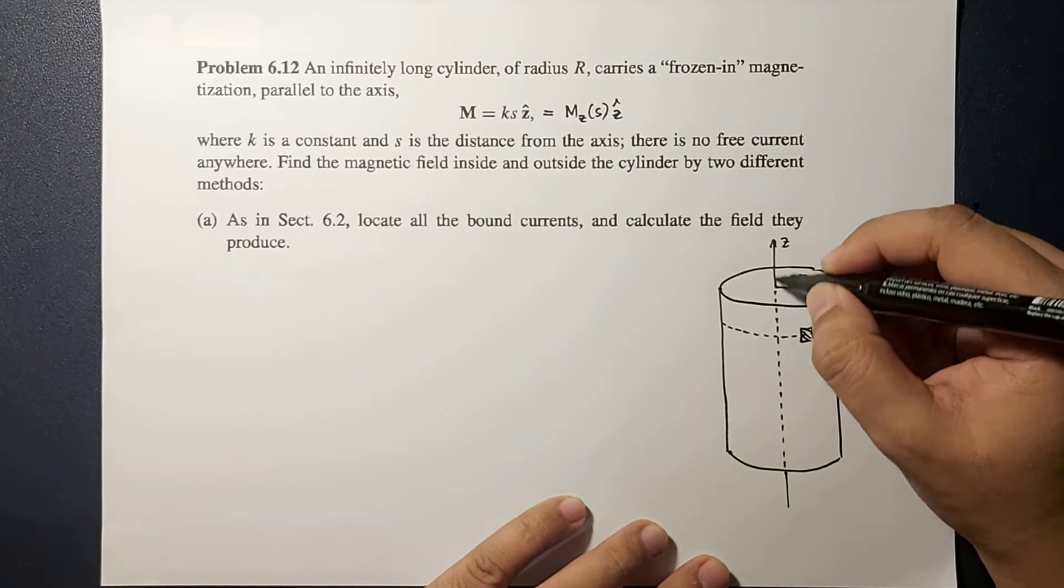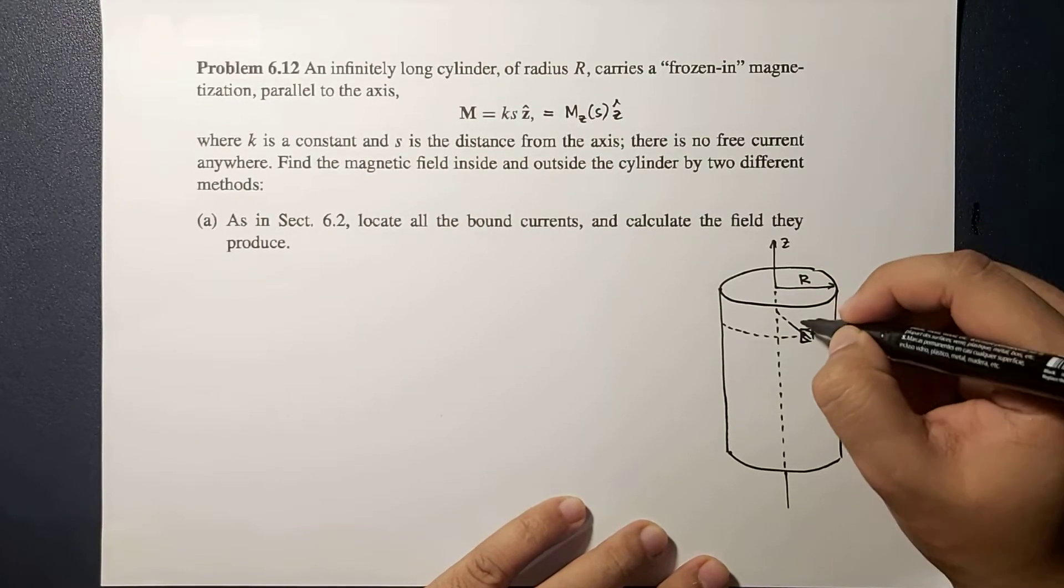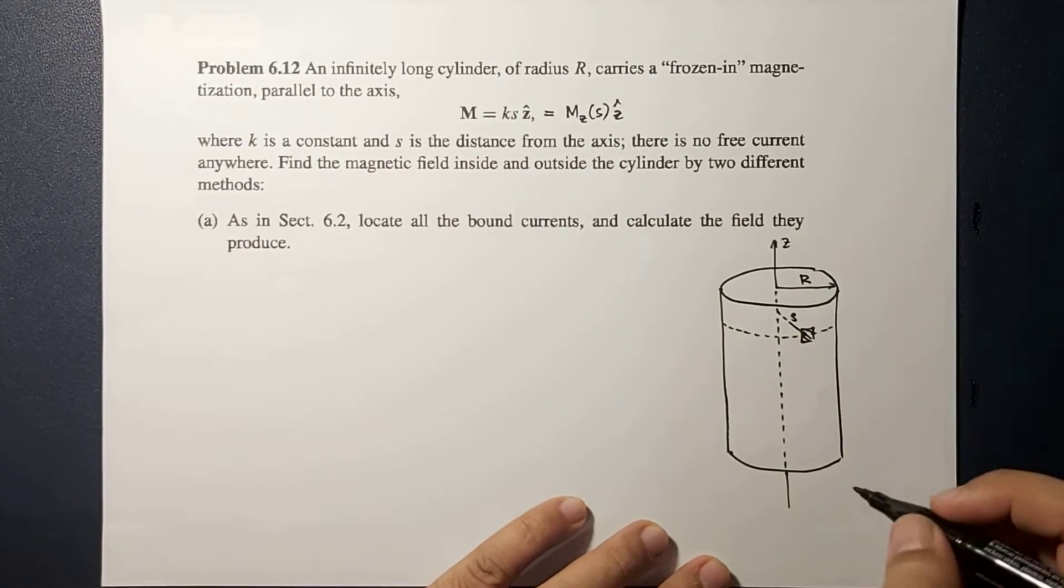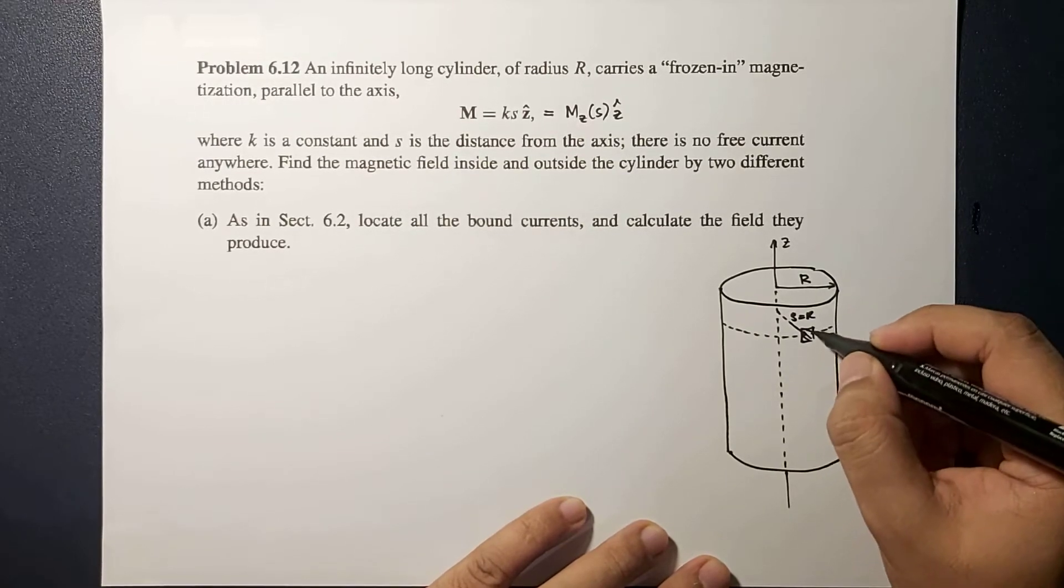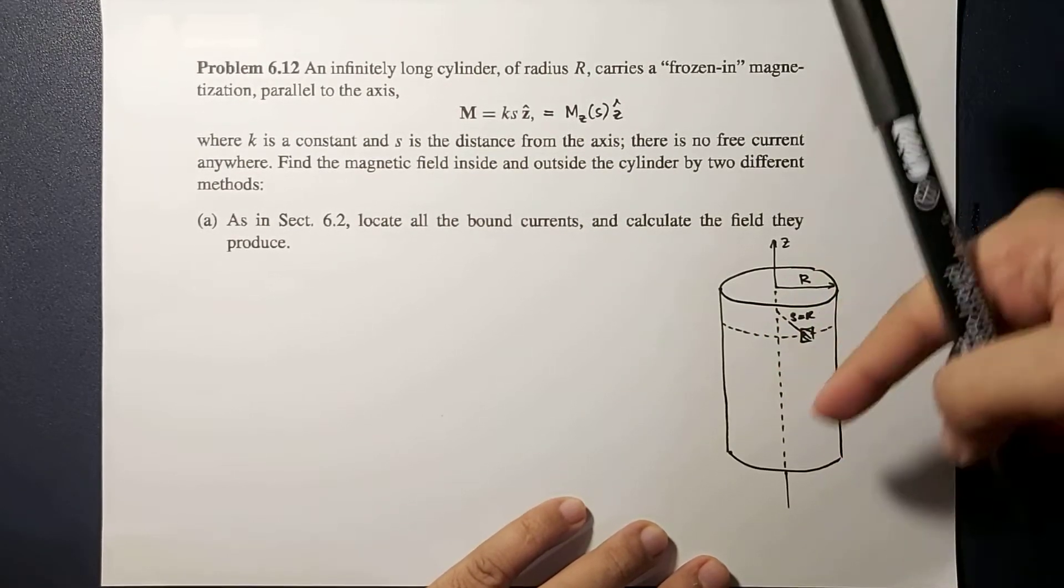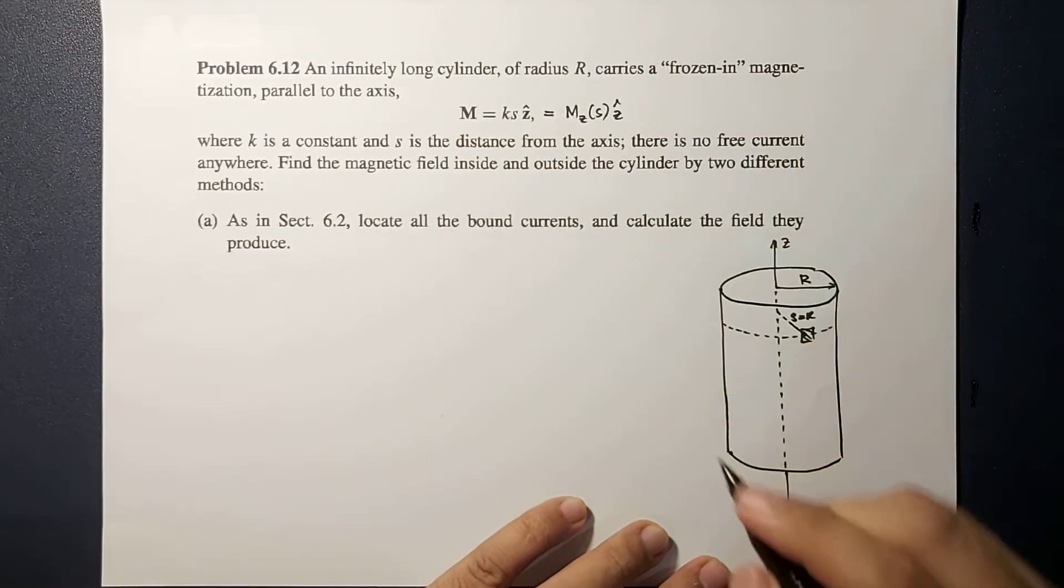From the Z axis, this is at a distance S which is equal to R, because this is at the lateral surface of your cylinder.